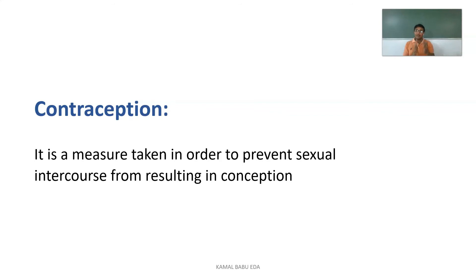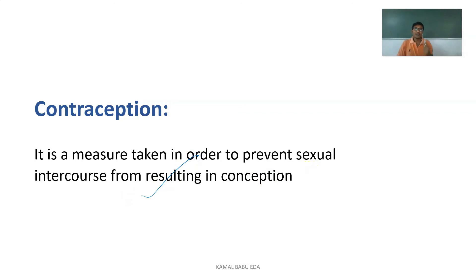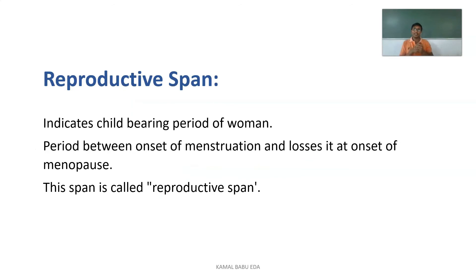Contraception: when an eligible adult couple wishes to prevent pregnancy while participating in sexual life, they can use contraception. It is a measure taken to prevent sexual intercourse from resulting in conception. Legally eligible couples can use contraception when they do not want pregnancy.